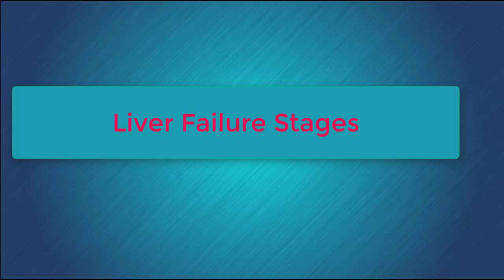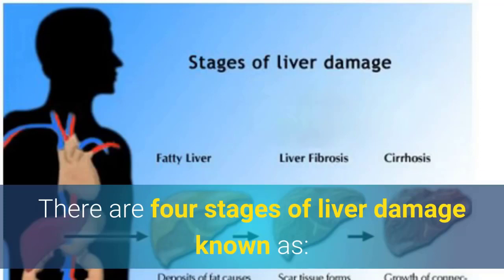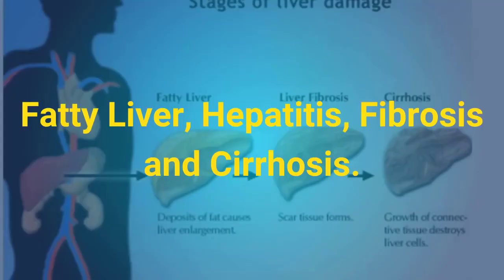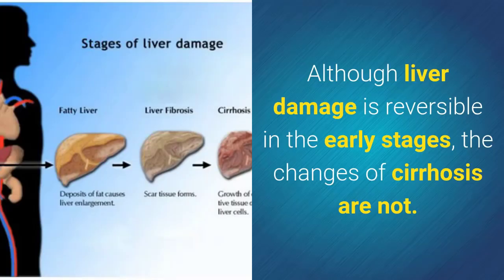What are the stages of liver damage? Fatty liver, hepatitis, fibrosis, cirrhosis. Liver disease refers to any disorder of the liver. The liver is a large organ in the upper right abdomen that aids in digestion and removes waste products from the blood.